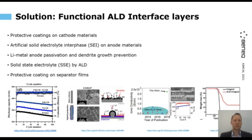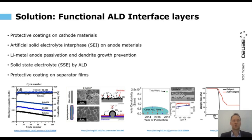Back to what we can do with ALD: we can make protective coatings on the cathode materials, we can make the artificial solid electrolyte interface layers, and we can make the passivation and dendrite growth prevention for the lithium metal anodes. Additionally, we can even make solid state electrolytes with ALD — that's a little bit more complicated from the process point of view, but something we are working on for the future. And also, protective coatings on the separator films and polymer films.